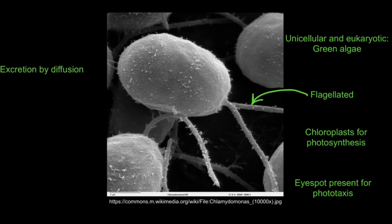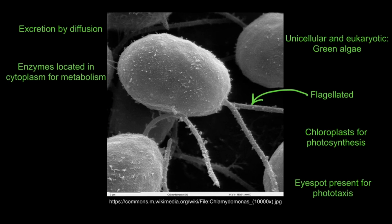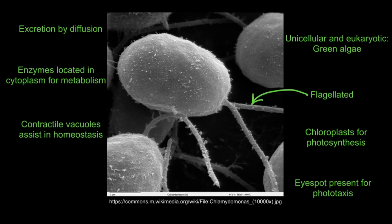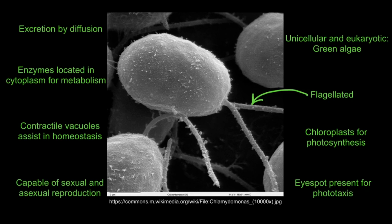In common with paramecium, Chlamydomonas also conducts excretion by diffusion, and also carries out metabolism using the enzymes located in its cytoplasm. Its contractile vacuoles are used for homeostasis, and Chlamydomonas is also capable of both sexual and asexual reproduction.